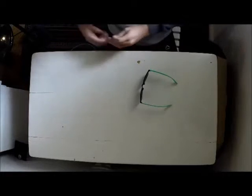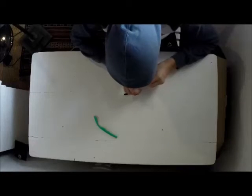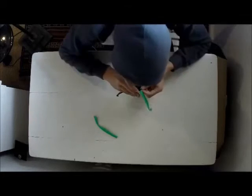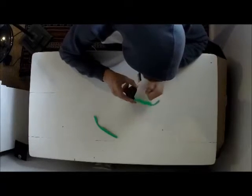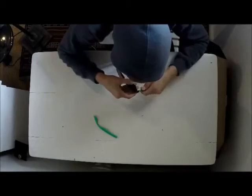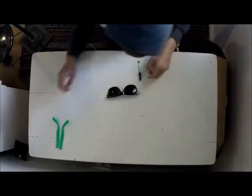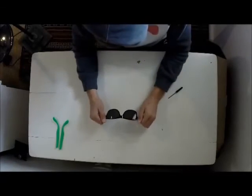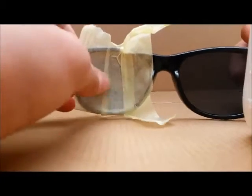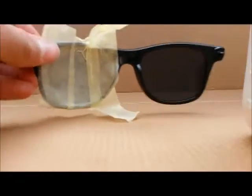I started off by taking off the green side panels on the sides of the glasses with two tiny screws. Then I taped up the inside of the glasses with masking tape.